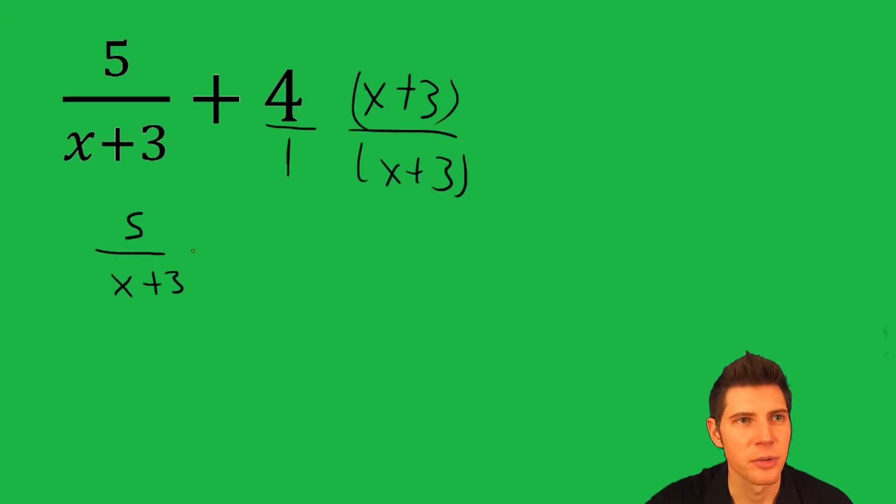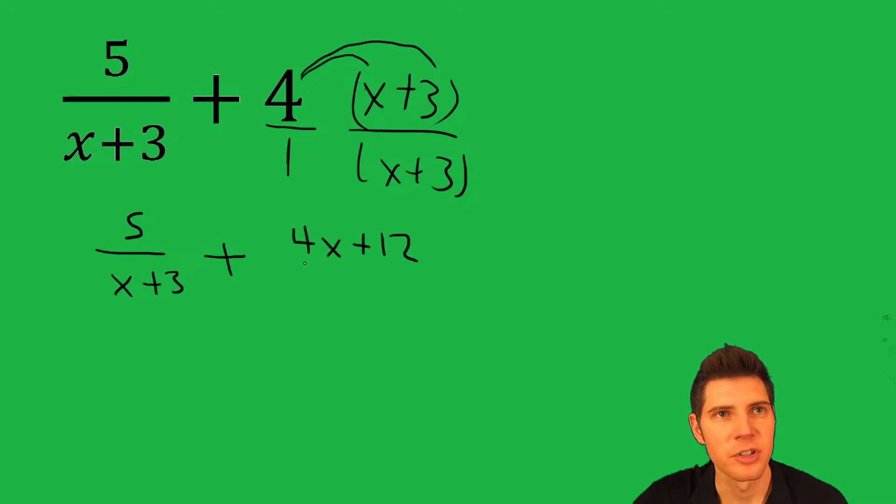So now we get 5 over x+3, plus, and then we're going to distribute: 4x+12, because 4 times 3 is 12, over x+3. Now that they have a common denominator, we can combine them into one.